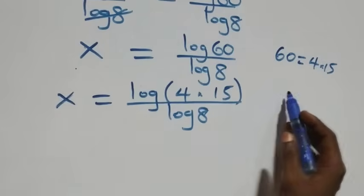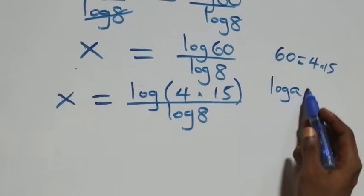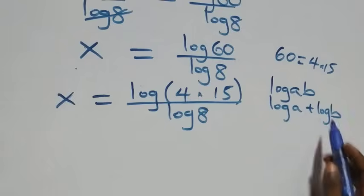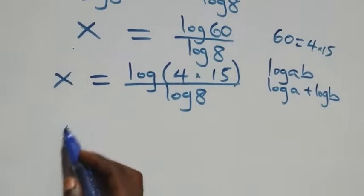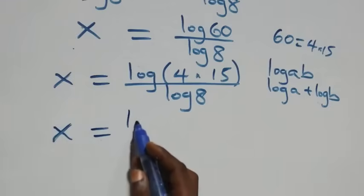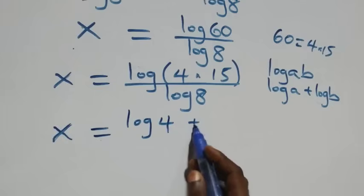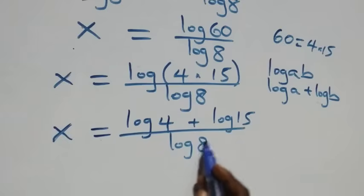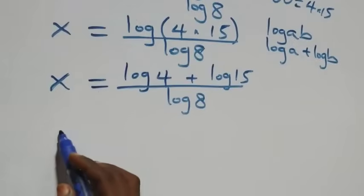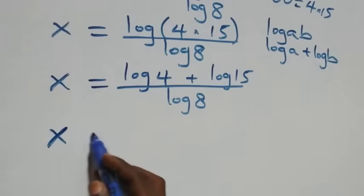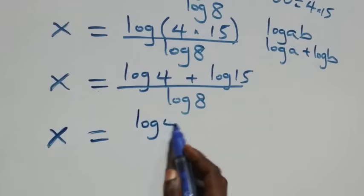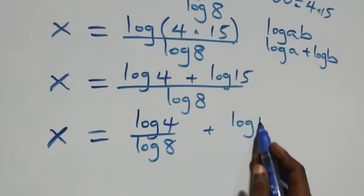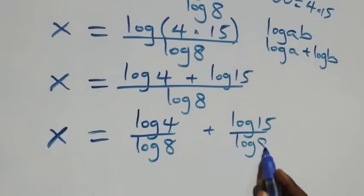This follows the law of logarithm: log of a times b is the same thing as log a plus log b. So what we have here becomes x equals log four plus log fifteen, all over log eight. When we separate this into two fractions, we have x equals log four over log eight, plus log fifteen over log eight.